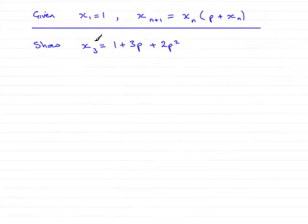In this next part we have to show that x₃, the third term in the sequence, is equal to 1 plus 3p plus 2p squared. So how are we going to do that?